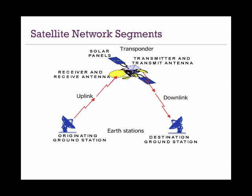Satellites operate in the super high frequency band of the electromagnetic spectrum. They are called transceivers because they have two functions — they send and receive signals at the same time. In a satellite transmission, the ground station uplinks the signal, which is received by the transponder, then regenerated and reflected back to the destination ground station.